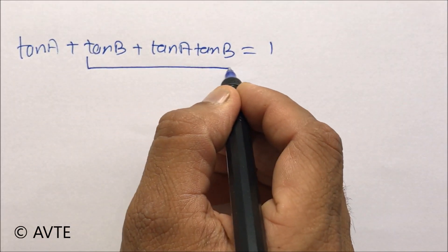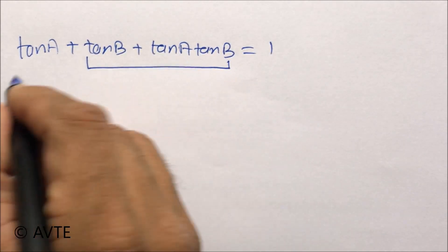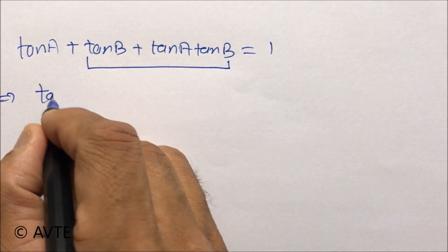From here you can link tan A with 1, or take tan B very common.